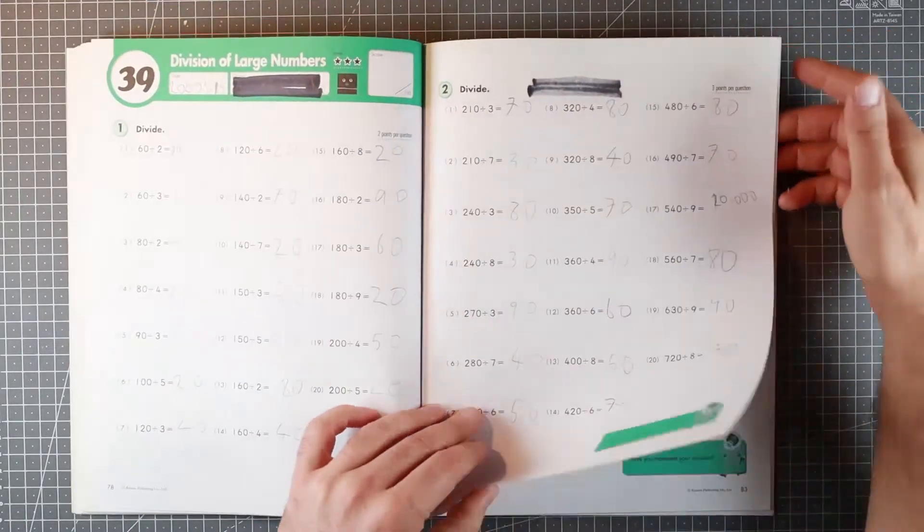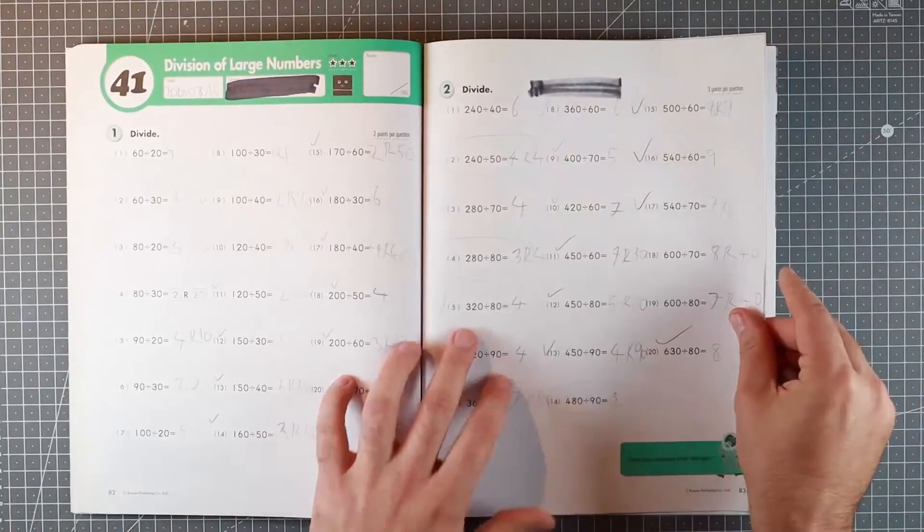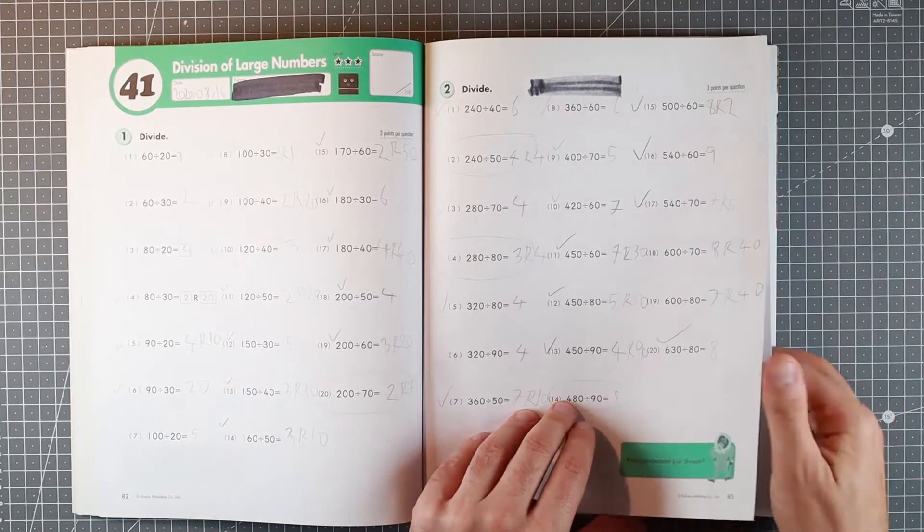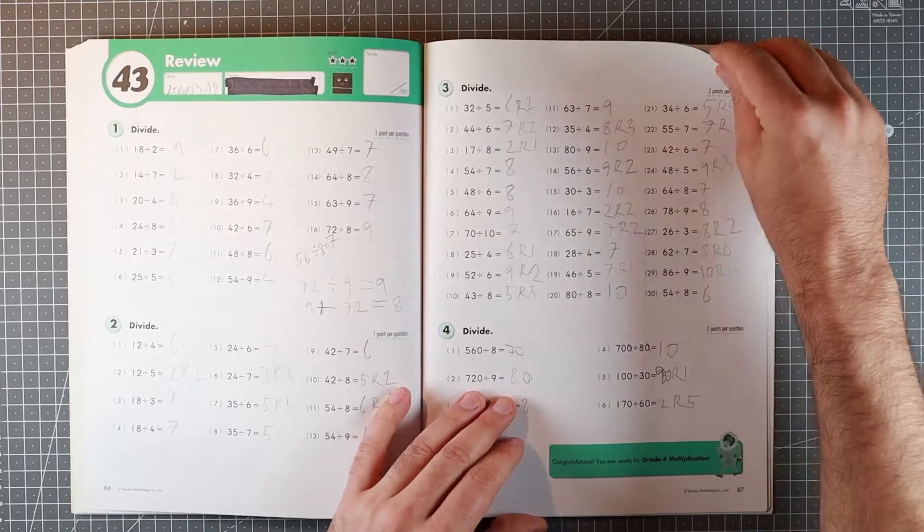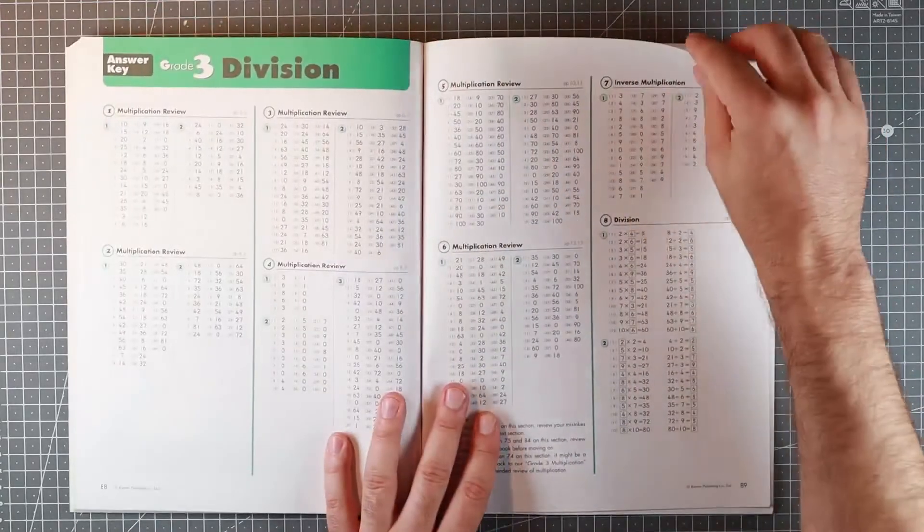And then a couple of pages for the large numbers, just to explain the concepts of taking away the zeros and figuring out what's left, a couple of pages of that, and then you have your answer key.